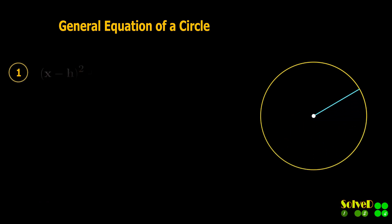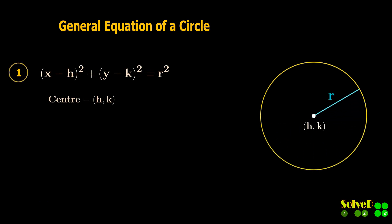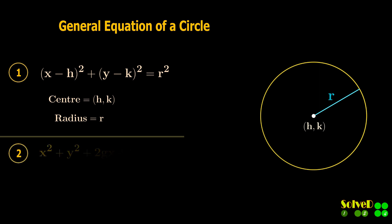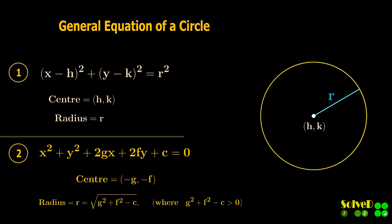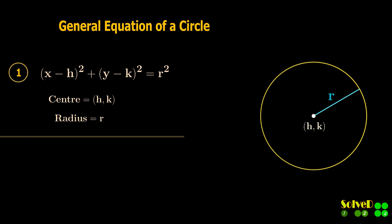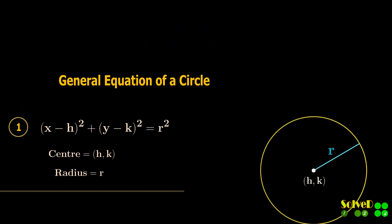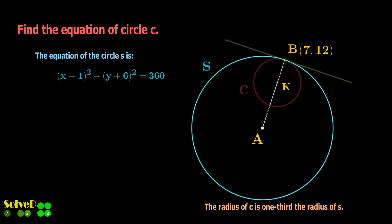The general equation of a circle can be written in these two forms. For now, let's consider the first one. Comparing this given equation with the general equation, we can obtain the center and the radius of circle S.